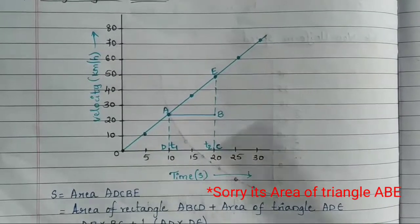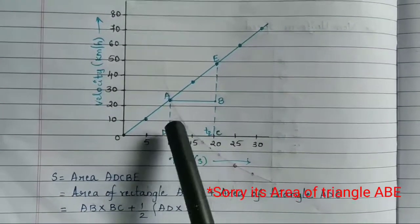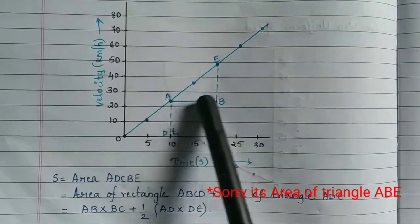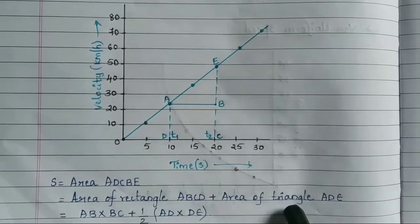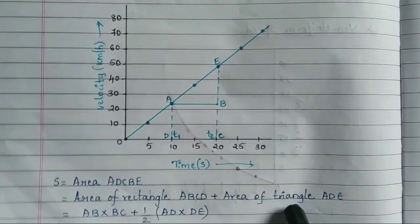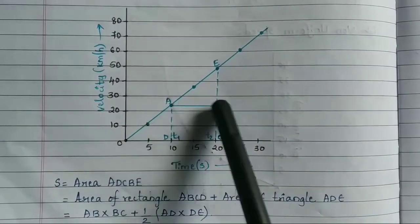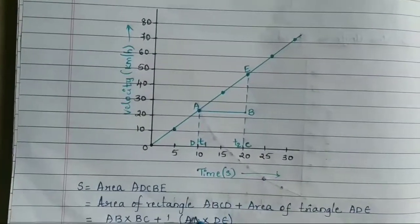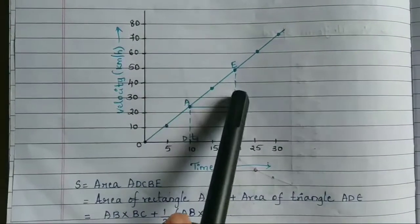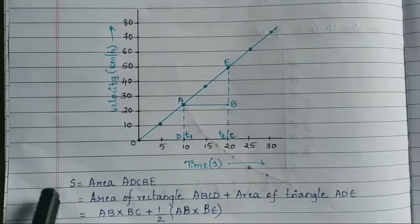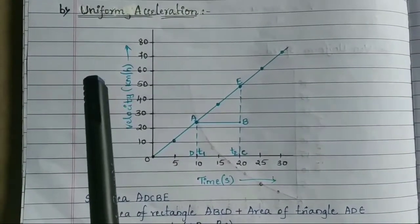Using area formulas: the area of the rectangle is length × breadth, where length is AB and breadth is BC. The area of the triangle is ½ × base × height, where base is AB and height is BE. Adding both gives us the total distance. When we know the values, we substitute and can easily find the distance for the velocity-time graph in the case of uniform acceleration.